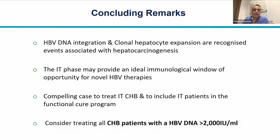In conclusion: HBV DNA integration and clonal hepatocyte expansion are recognized events associated with hepatic carcinogenesis. The immune-tolerant phase may provide an ideal immunological window of opportunity to treat or use novel therapies. There is a compelling case to treat immune-tolerant chronic hepatitis B and include these patients in functional cure programs. We should consider treating all patients with chronic hepatitis B with HBV DNA greater than 2,000 IU for a simplified management approach, based on emerging data. Thank you for your attention and to all collaborators who contributed to this work.